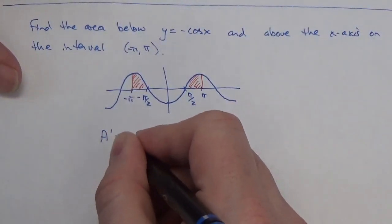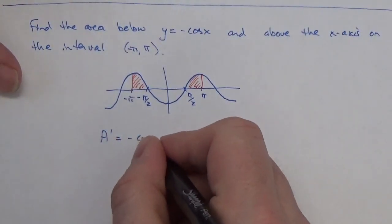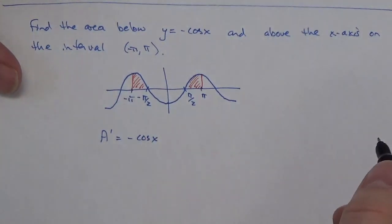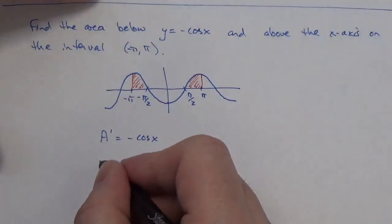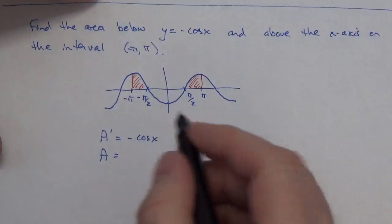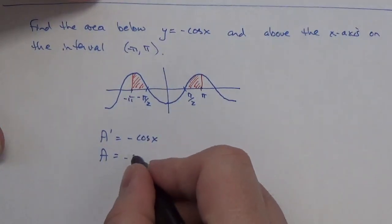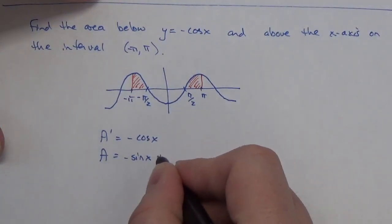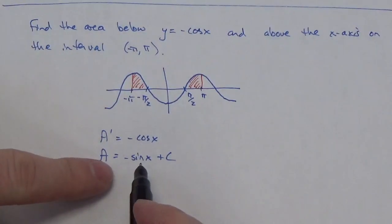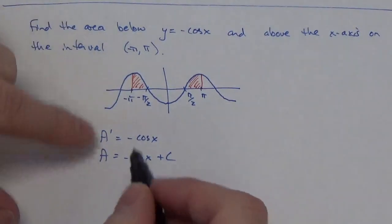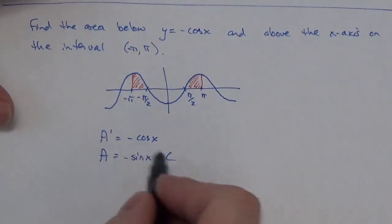So, I know that the derivative of my area function is going to be negative cosine of x. Okay, and so my area function is going to be the negative sine of x plus c, because that will be the antiderivative of negative cosine. And you can just check that by taking the derivative of our answer here.